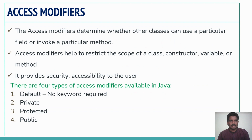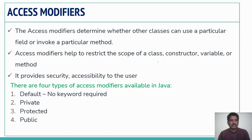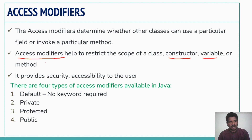What are Access Modifiers? Access Modifiers determine whether other classes can use a particular field or variable, or invoke a particular method. With the help of Access Modifiers, we can access a variable within a class or from outside the class. The Access Modifiers help to restrict the scope of a class, a constructor, a variable, or a method — restricting them from being accessed from outside the class.